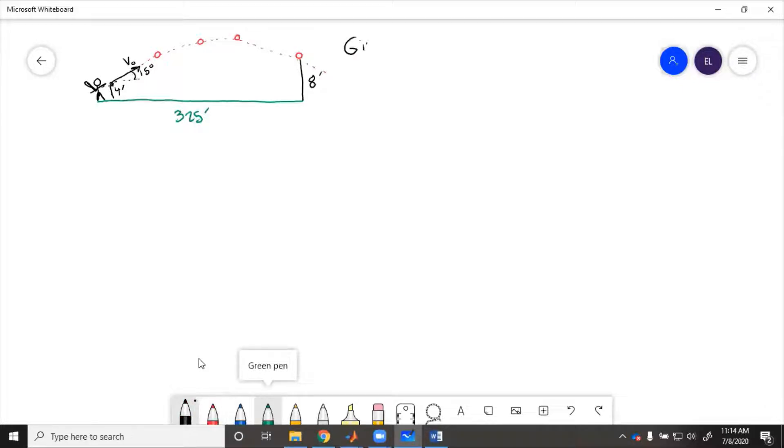If we're given initial height equals four feet, we know that this final height equals eight feet, we know that this distance it needs to go is 325 feet, and initial angle equals 15 degrees. We need to find the minimum speed required to clear the fence. How fast does the batter need to hit the ball to make a home run?